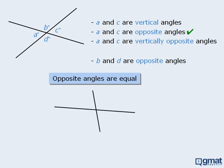So if we have any two intersecting lines, these two angles must be equal, and these two angles must be equal. Also note that since angles on a line always add to 180 degrees, we can also say that x plus y must add to 180.